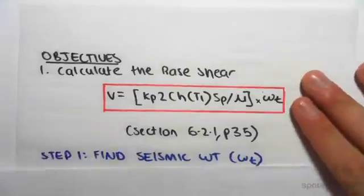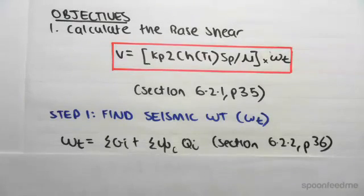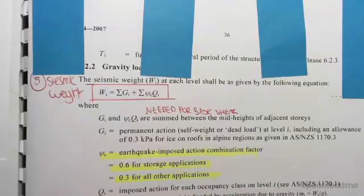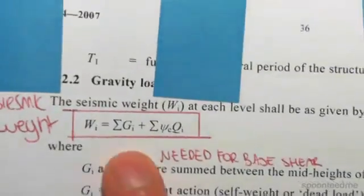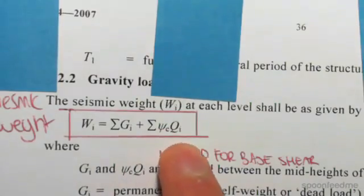The first thing we're doing is finding W subscript t, which is known as the seismic weight. The seismic weight is defined in section 6.2.2 on page 36. If I zoom in, the weight is the sum of the gravity plus the sum of psi c qi.